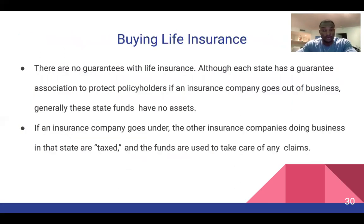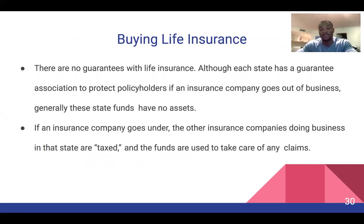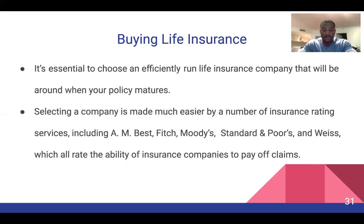When buying life insurance, there are no guarantees, although each state has a guarantee association to protect policyholders if an insurance company goes out of business. Generally, these state funds have no assets. If an insurance company goes under, the other insurance companies doing business in that state are taxed and the funds are used to take care of any claims.